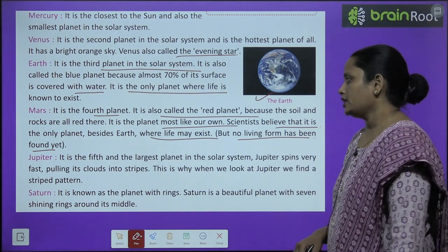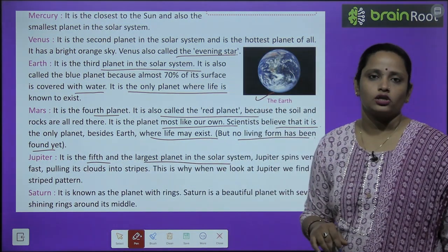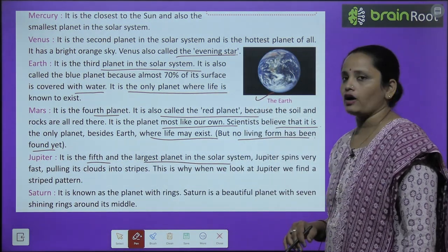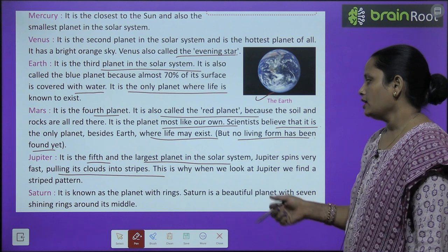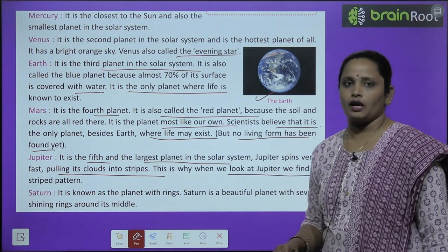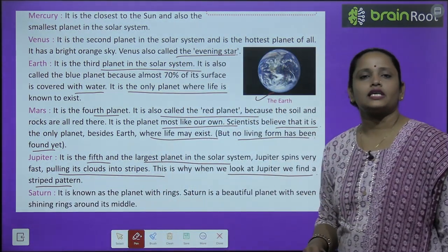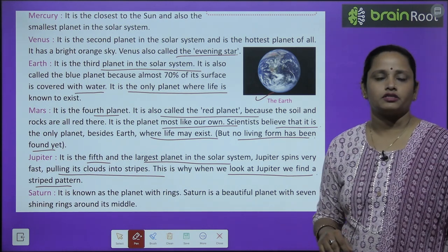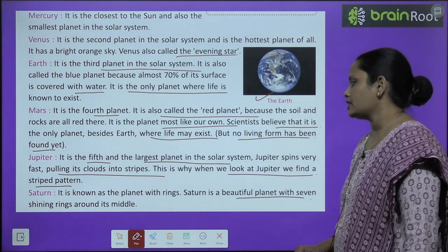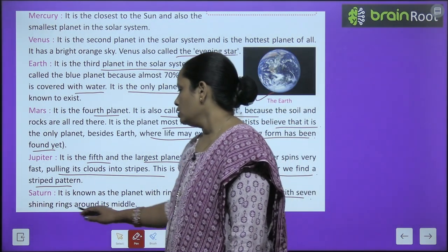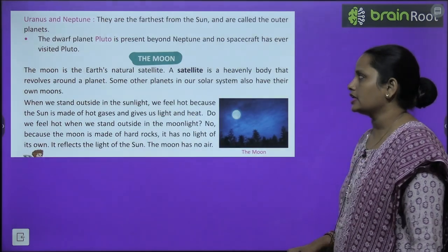Jupiter is the fifth and the largest planet in the solar system. Jupiter spins very fast, pulling its clouds into stripes — this is why when we look at Jupiter we find a striped pattern. Next is Saturn, known as the planet with rings. It is a beautiful planet with seven shining rings around its middle.